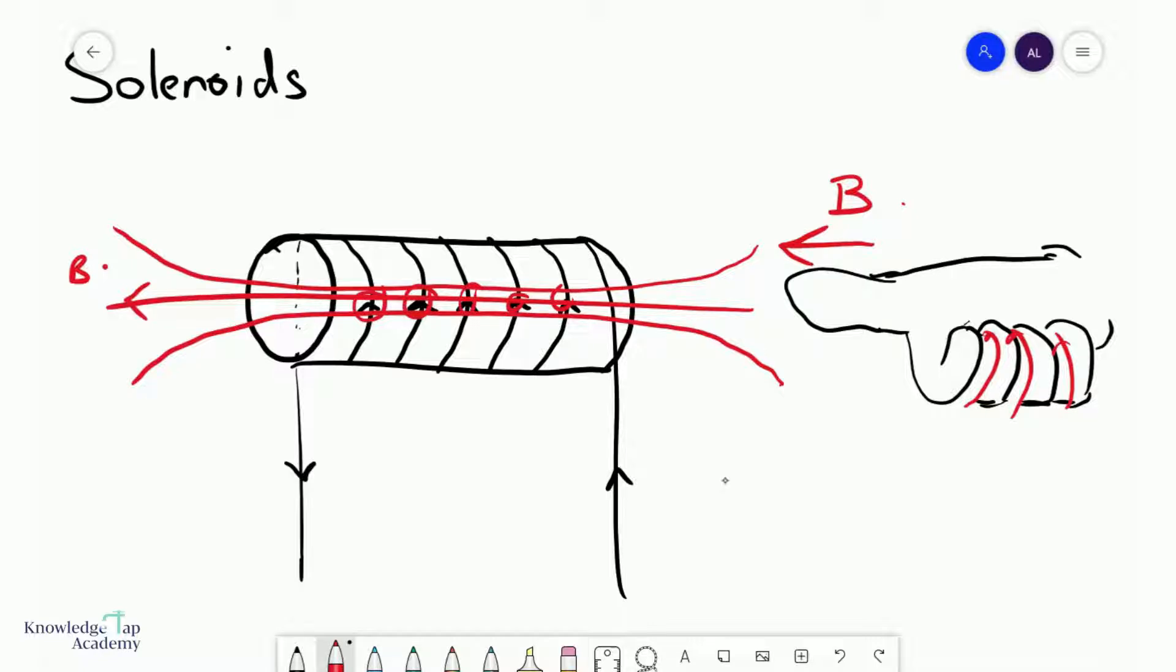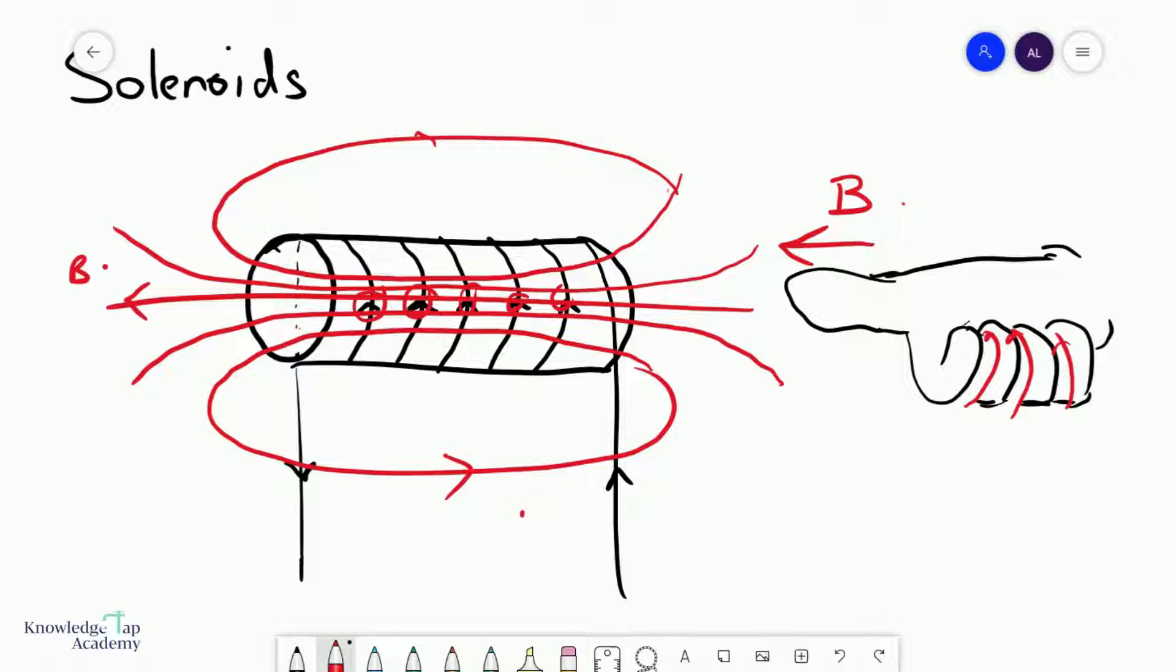In fact when you pass a current through a solenoid you are effectively turning the solenoid into a bar magnet as we have seen before. And so that means if you remember, within the magnet itself the magnetic field must always travel from south to north. And so the south pole of this magnetized solenoid will be here and the north pole of this magnetized solenoid will be right there.